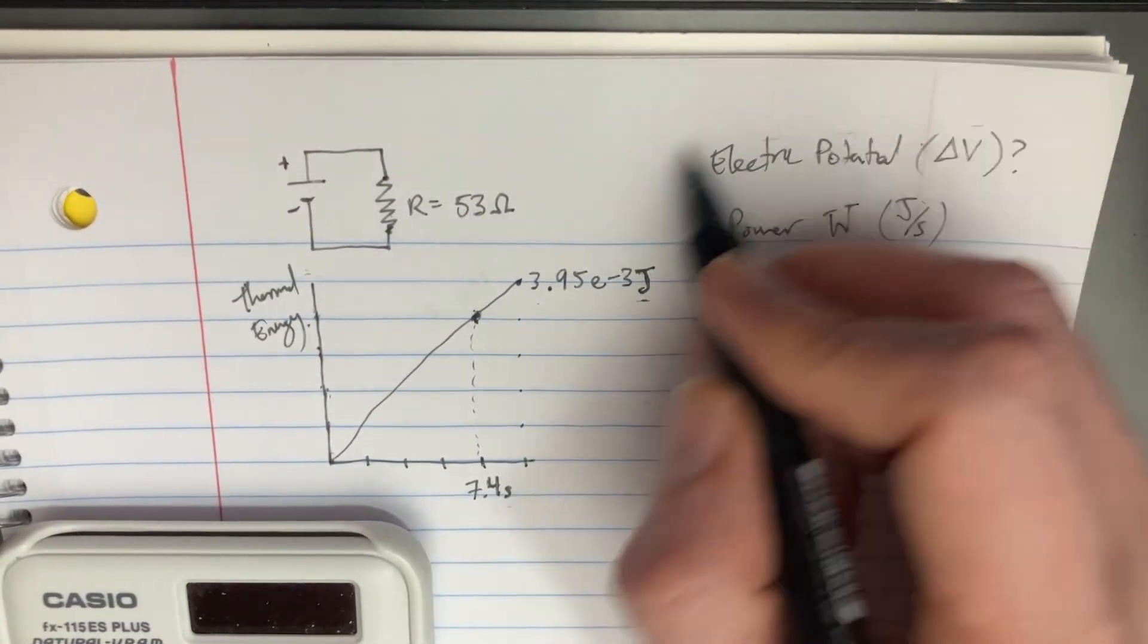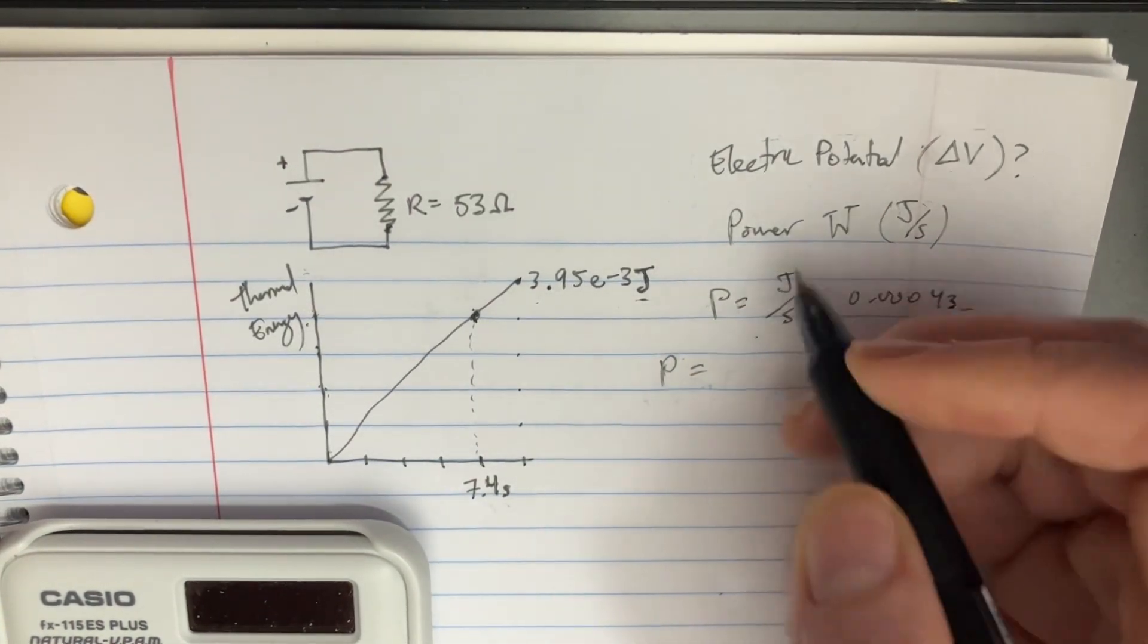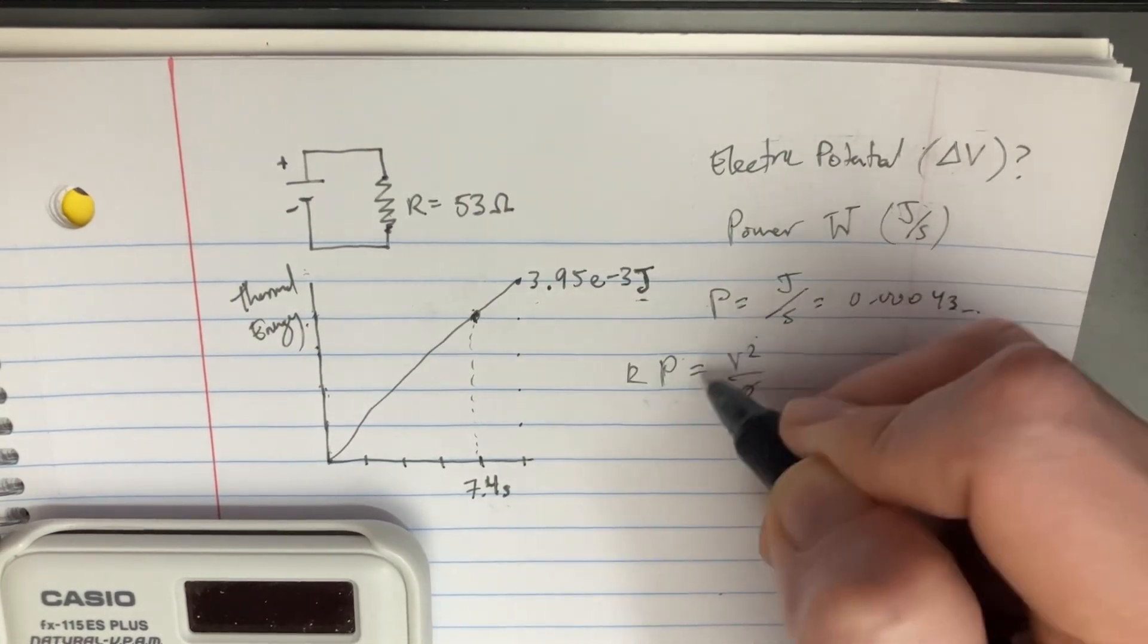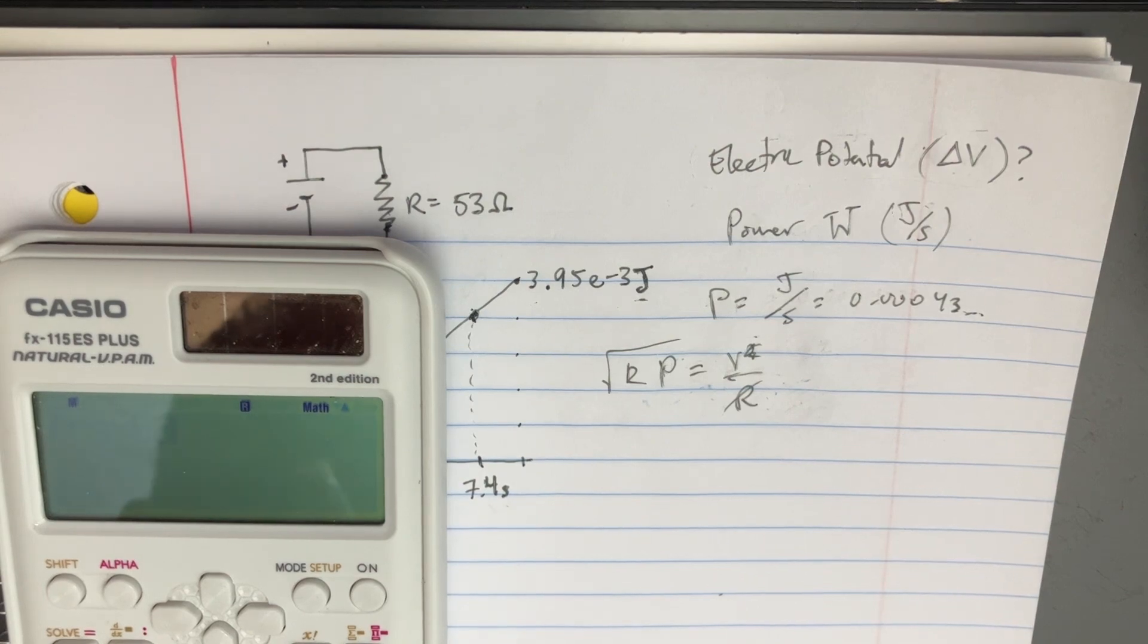Let's figure out what electric potential is, because we know that is related to power as well, V squared over R. If we multiply R on both sides and then square root this, we'll get V. So let's multiply this by 53, and then square root the answer,